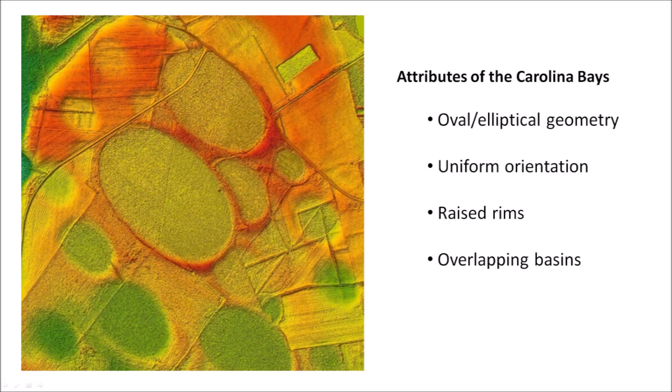The Carolina Bays have four main attributes. They have oval or elliptical geometry. They have uniform orientation. The basins have raised rims, and they frequently overlap while maintaining their characteristic geometry. A valid hypothesis must be able to explain how these four attributes originated from the action of known physical mechanisms of natural events.